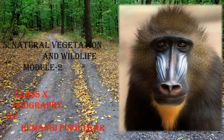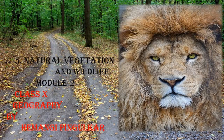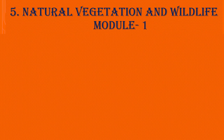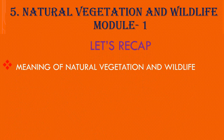This video describes lesson number 5, Natural Vegetation and Wildlife, Module 2. In Module 1, we studied the meaning of natural vegetation and wildlife. Natural vegetation refers to the plant life that grows naturally in a particular geographical region. The plants that make up natural vegetation are valuable resources as they provide us timber, fruits, medicinal plants, shelter to animals, oxygen, and protect soil and store water. Natural vegetation means plants that have not been grown by humans.